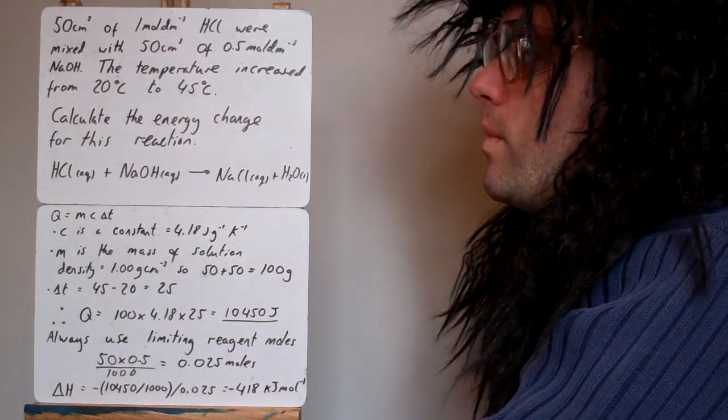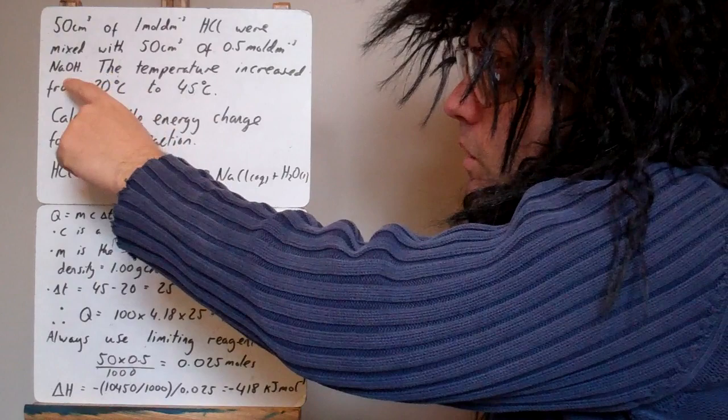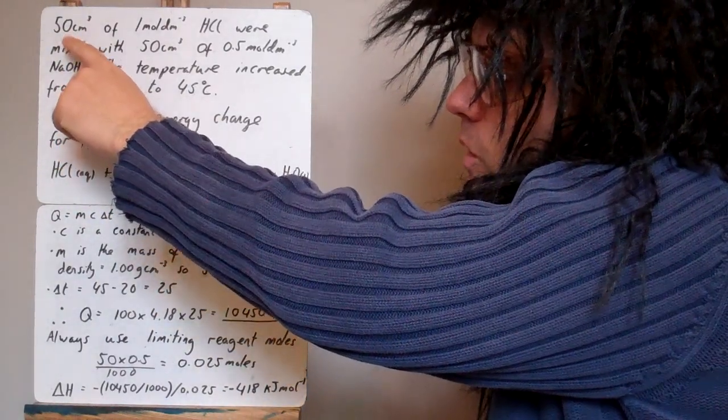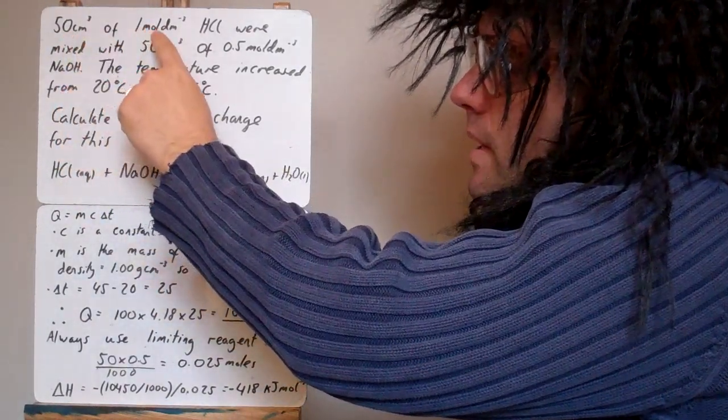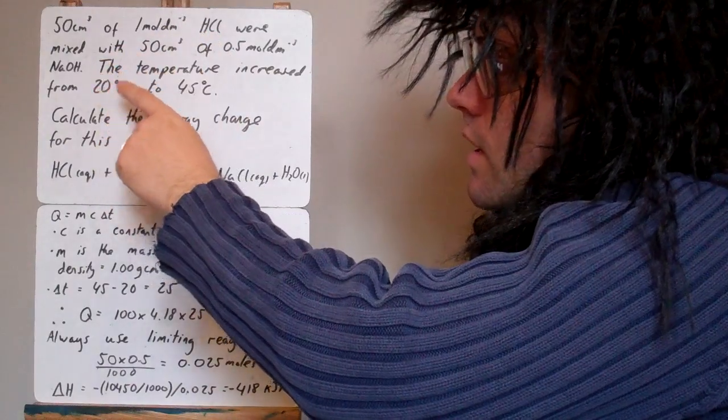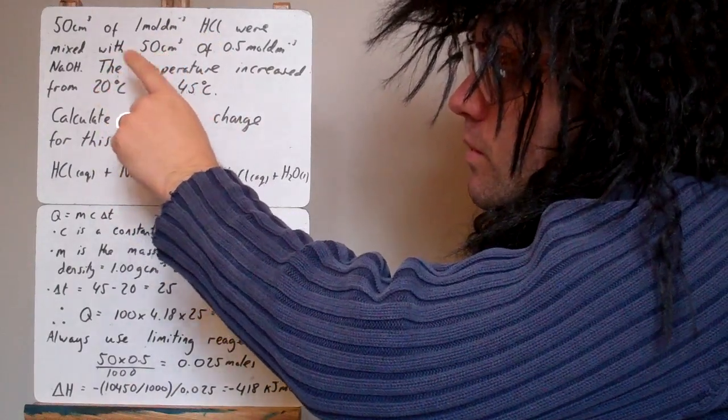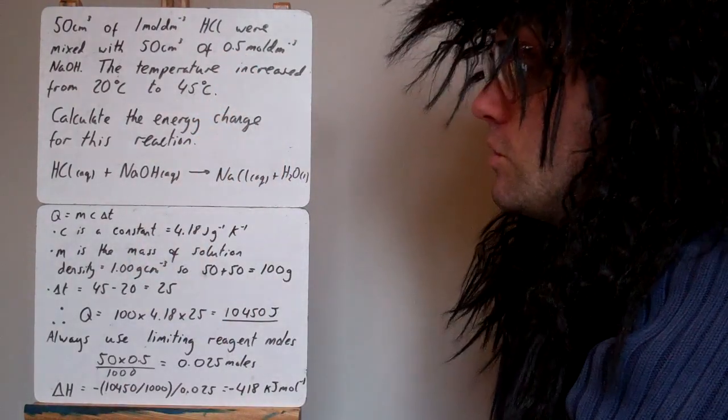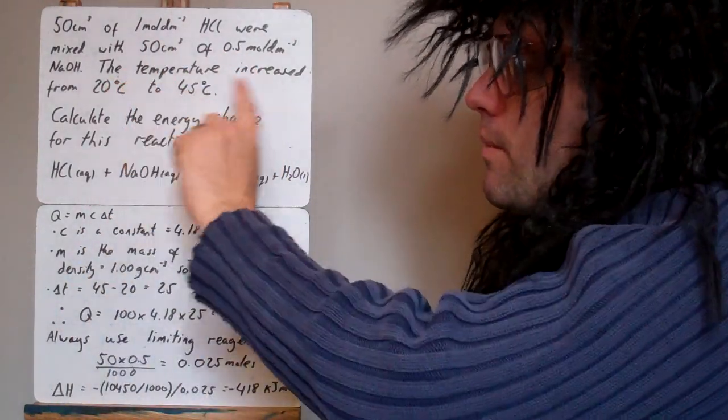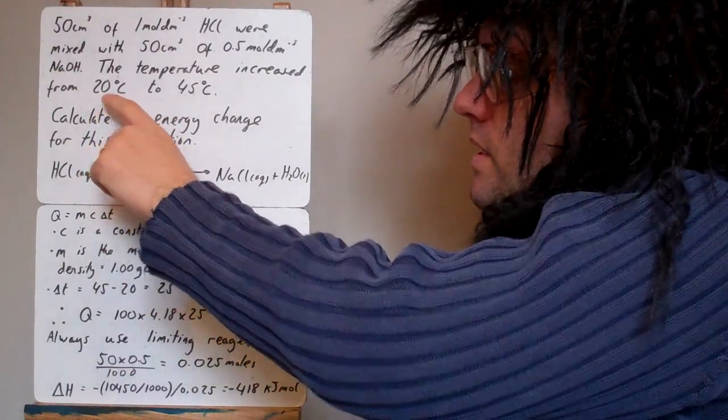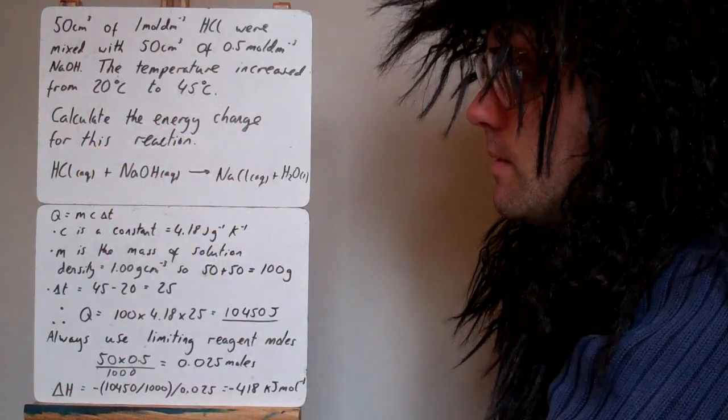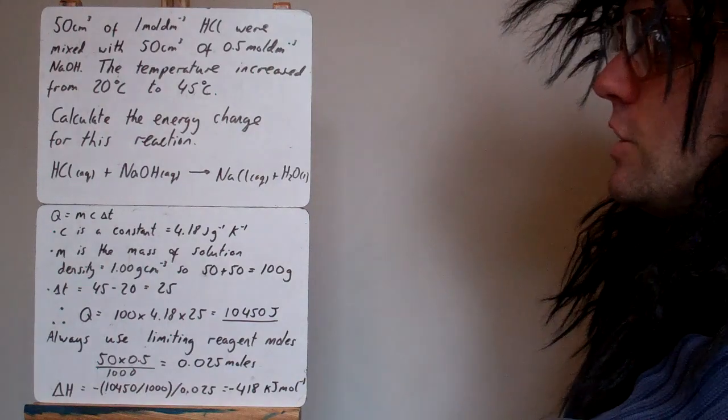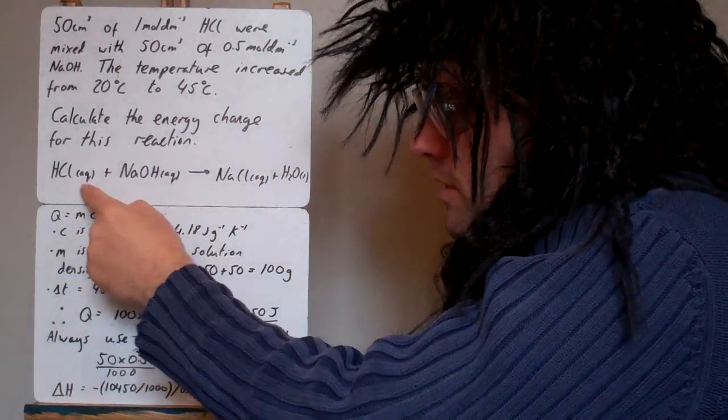In this example, we're mixing HCl with sodium hydroxide. We've got 50 cm³ of the HCl, and it's 1 mole per dm³ concentration. We've also got 50 cm³ of the sodium hydroxide, and it's 0.5 moles per dm³ concentration. When we mix those two together, the temperature increased from 20 to 45 degrees centigrade. So we want to calculate the energy change for this reaction. So that's the balanced equation there.